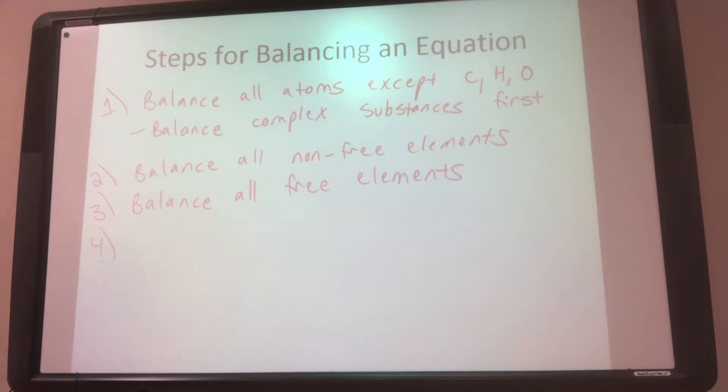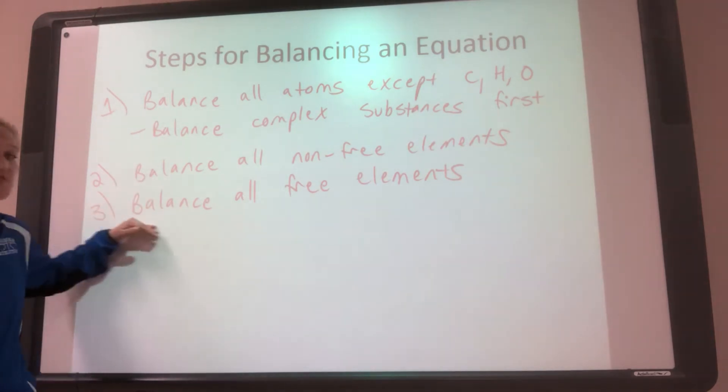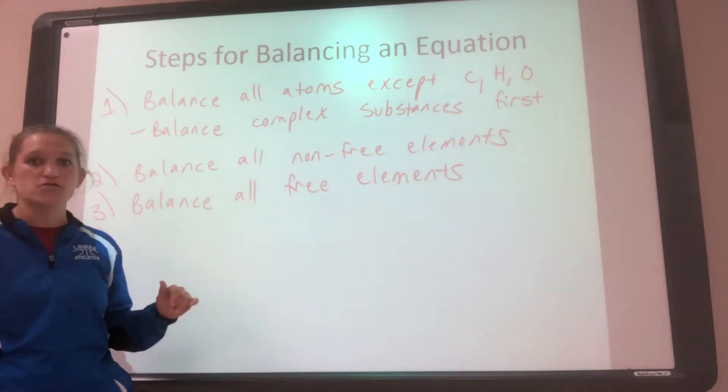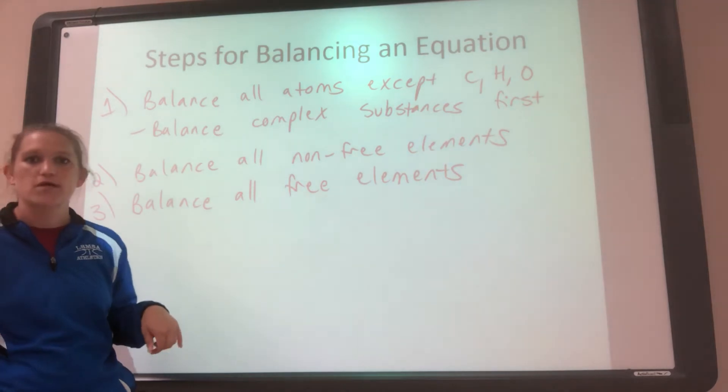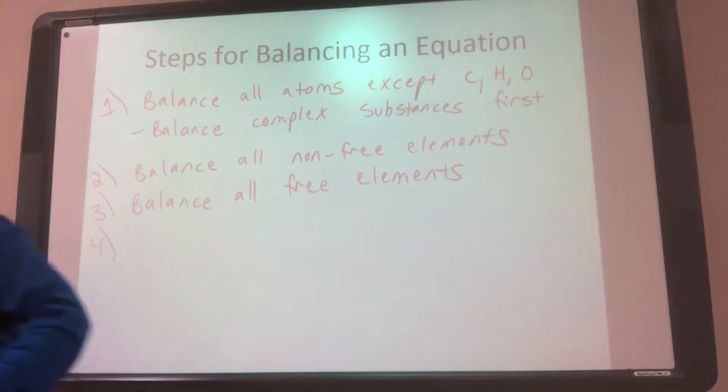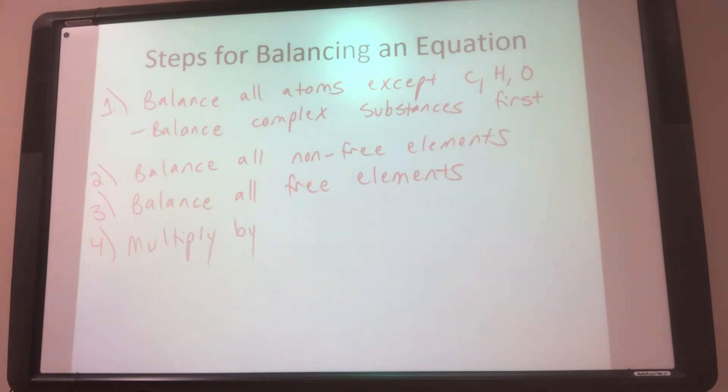After we do all the non-free elements, then we're going to balance all of our free elements. And then once we do the free elements, depending on what your coefficients are after this step, you may or may not do step four. So it depends on if you have fractions in your coefficients. We can't have fractions. So if we have fractions, then you have to do step four. Step four is to multiply by a factor to get rid of fractions.